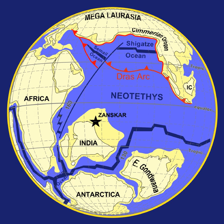Roughly 750 million years ago, the earliest known supercontinent Rodinia began to break apart. The continents later recombined to form Pannotia, 600 to 540 million years ago, then finally Pangaea, which broke apart 200 million years ago.